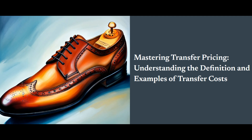Imagine a multinational corporation that manufactures smartphones. It has a factory in China that produces these smartphones and a sales office in the United States. When the factory sells a smartphone to the U.S. office, it needs to set a price for that transaction. This price isn't just a random number — it needs to reflect the actual value of the smartphone as if it were being sold to an independent third party. This is where the concept of the arm's length principle comes into play, which states that the transfer price should be consistent with prices charged between unrelated parties in similar circumstances.